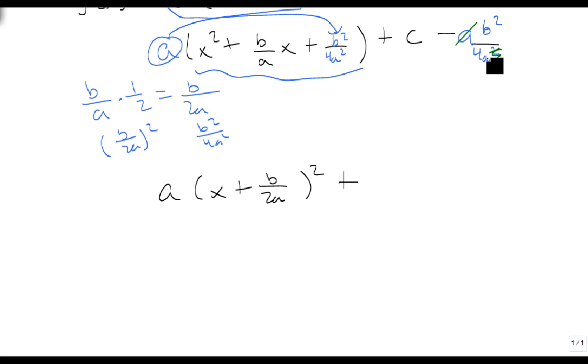And this becomes, we have a 4a, so I'm going to multiply top and bottom by 4a/4a. This becomes (4ac - b²)/4a.